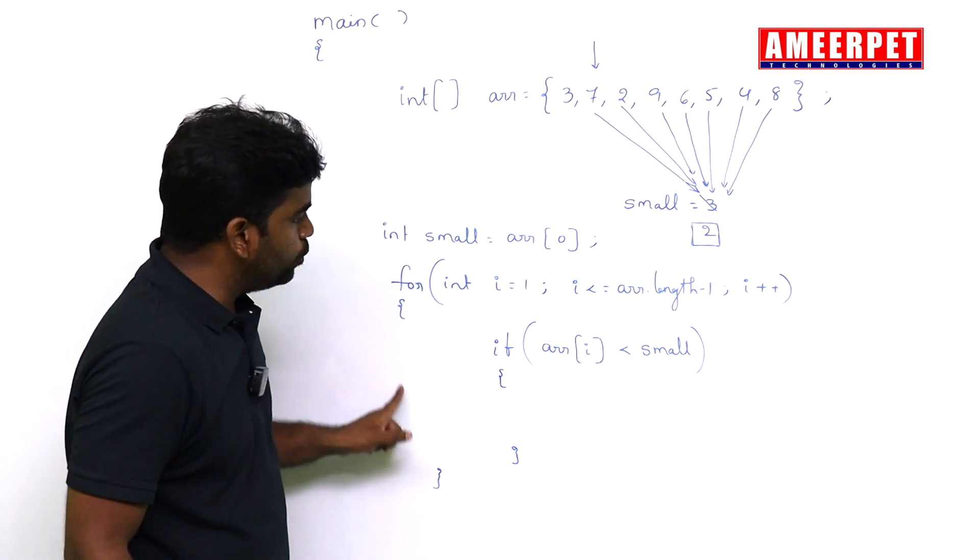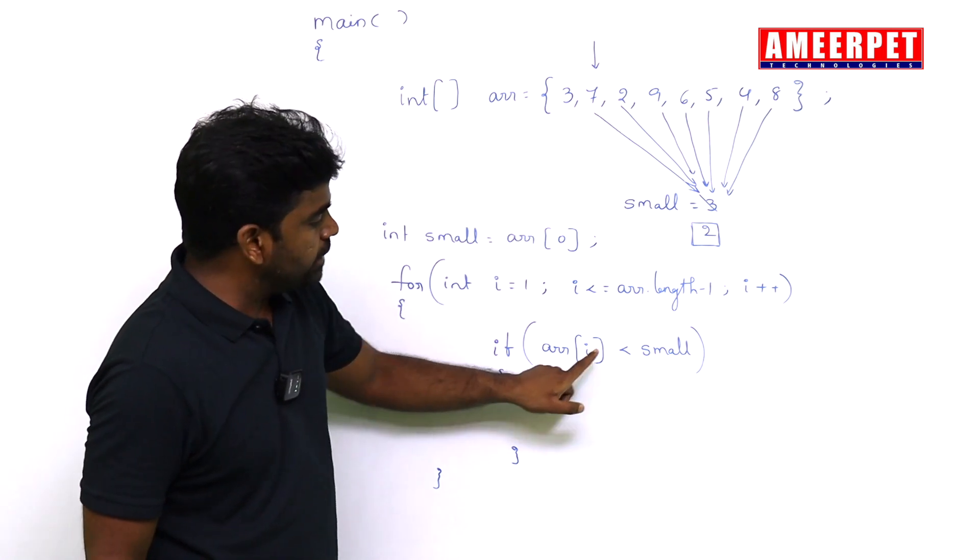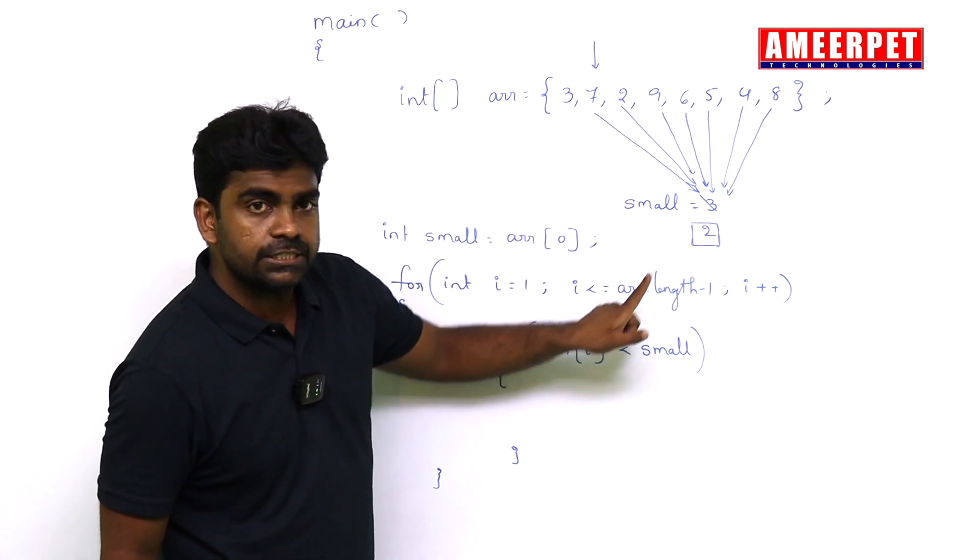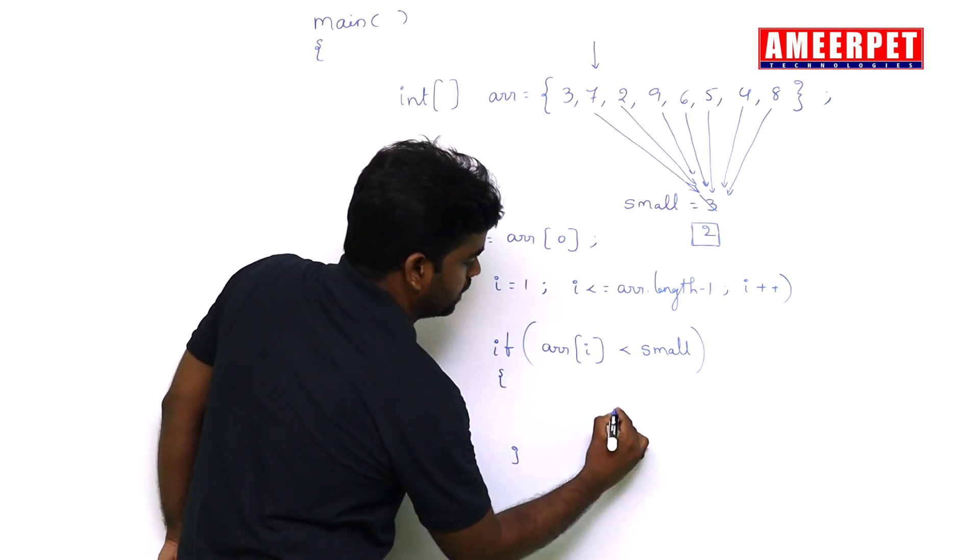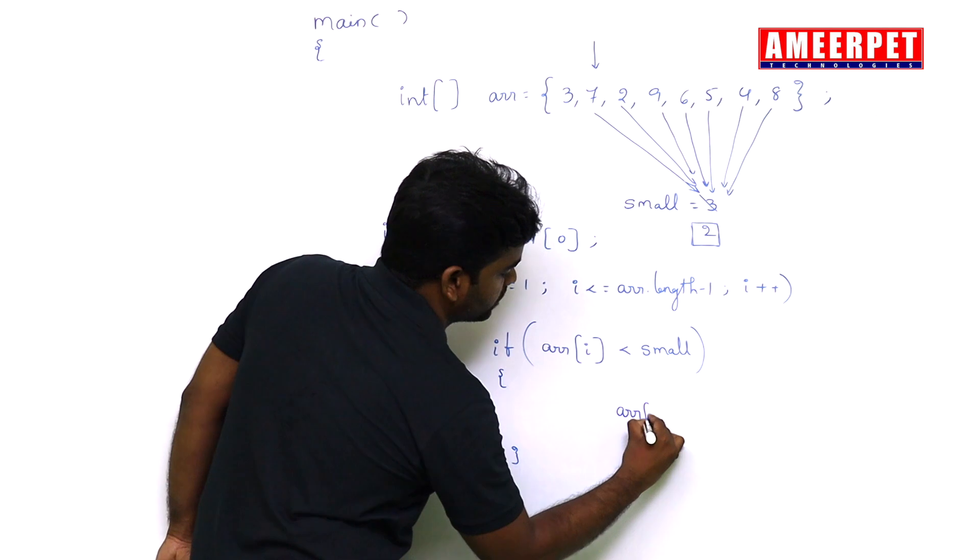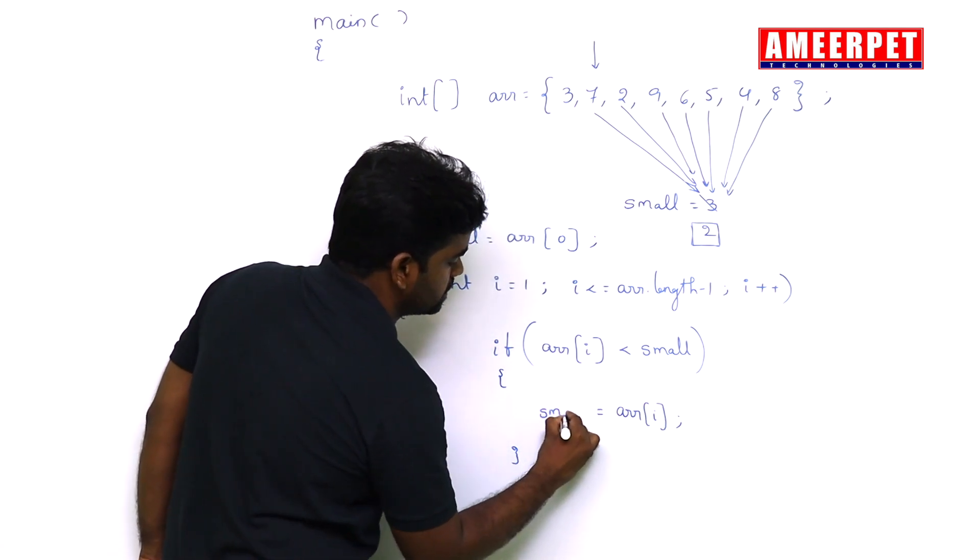Then again the loop will repeat. Next i value, now it will take 2. Now 2 is less than small - yes, condition is true. Then store that index value into small. Index value means arr[i], store into small.